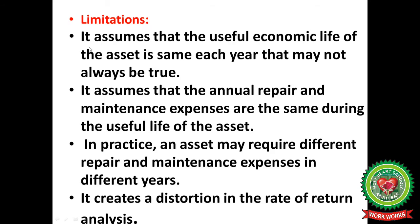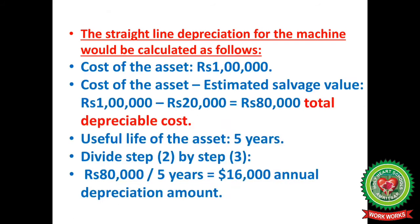To summarize the limitations: straight line method assumes that the useful economic life of the asset is the same each year, which may not always be true. It also assumes that annual repair and maintenance expenses are the same during the useful life of the asset, whereas in practice an asset may require different repair and maintenance expenses in different years. Additionally, it creates a distortion in the rate of return analysis.